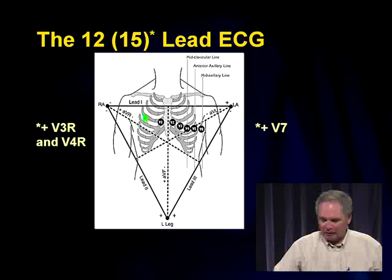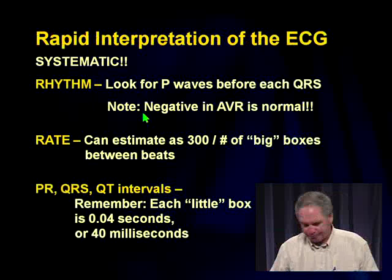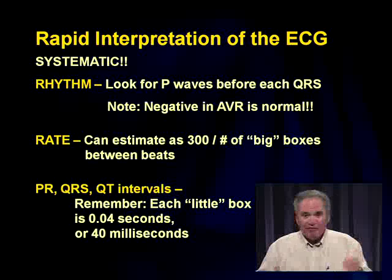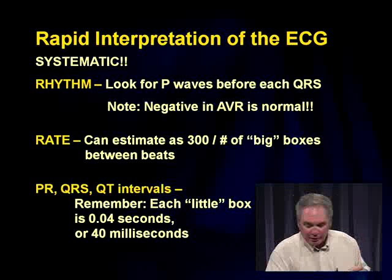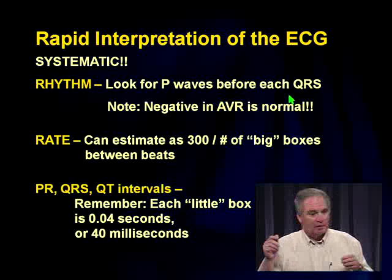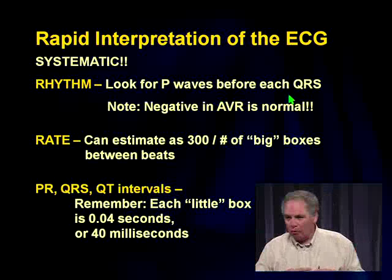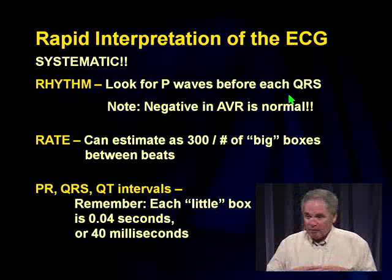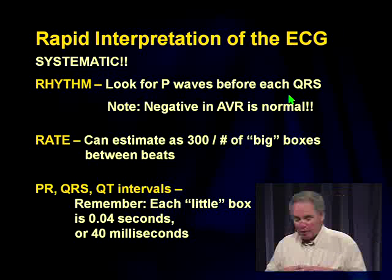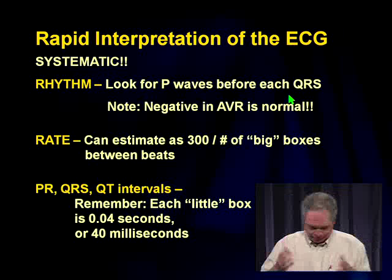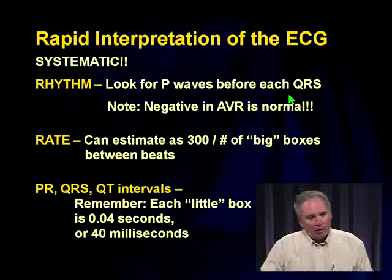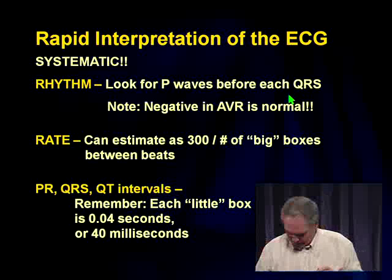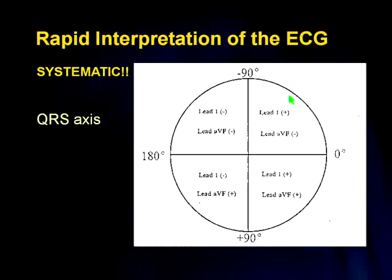When looking at an EKG, I go systematically even after 35 to 40 years. First, rhythm: is there a P wave before each QRS? Remember, P waves are normally negative in aVR — don't be alarmed by that. Rate can be estimated as 300 divided by the number of big boxes between heartbeats. Then we look at the PR, QRS, and QT intervals.